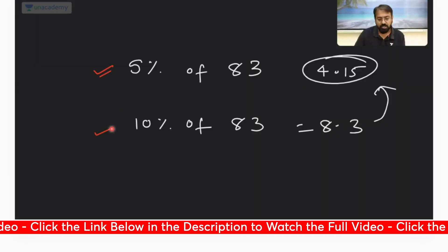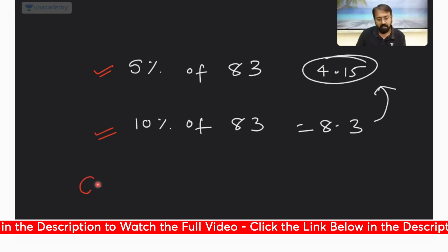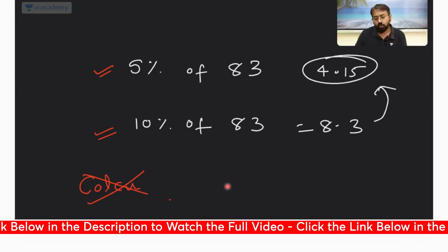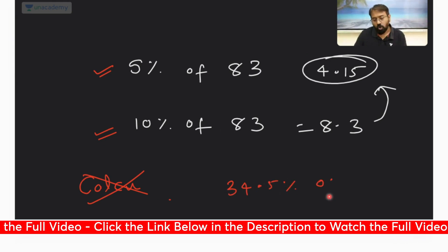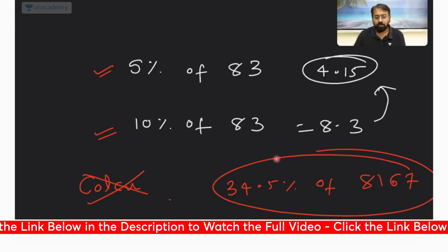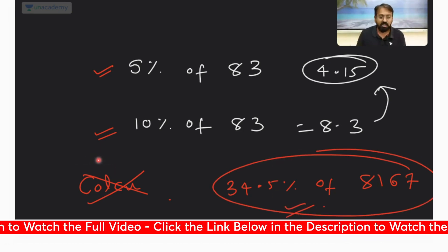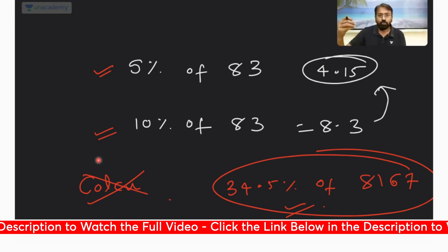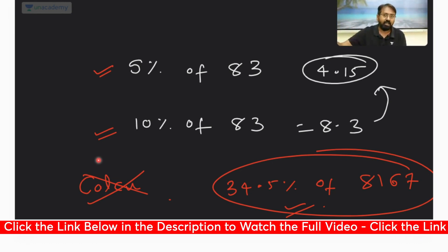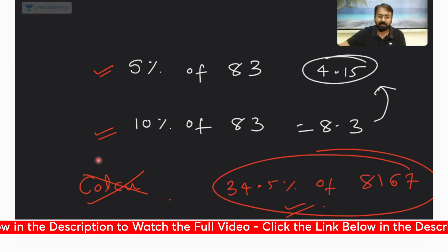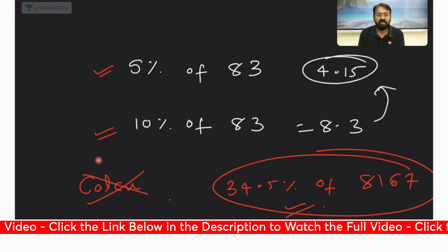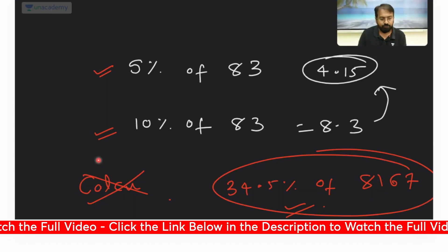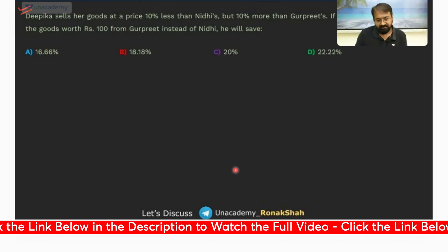Now guys, one thing when you solve practice questions, when you solve DPP or whenever you do practice, avoid using calculator. Don't use calculator unless the calculation is really complicated. For example, if you want to calculate 34.5% of 8167, in such scenario maybe you can use calculator. But in CAT exam the calculator is allowed, but in other exams the calculator is not allowed. When you are practicing, you can just think that you are preparing for all the exams, not only CAT exam. So for such calculations try to do it in your mind.